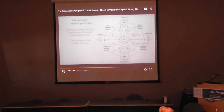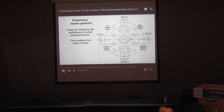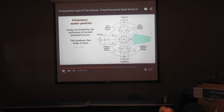Elementary matter particles, Torexes, are formed by the unification of excited, polarized Torexes. This produces four kinds of Torex: electrons, positrons, ethertrons, and cingulatrons.